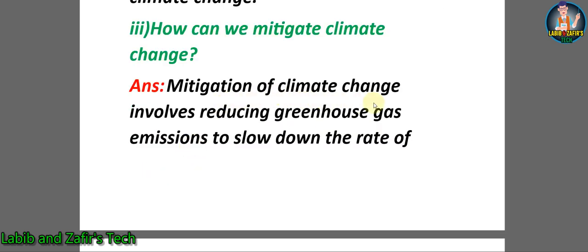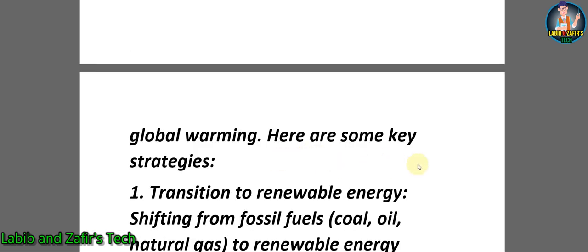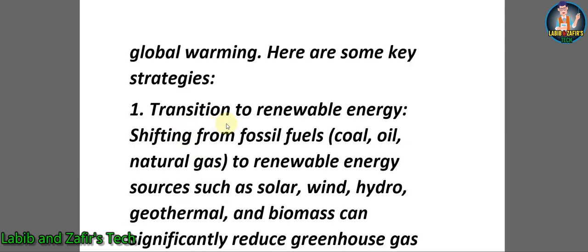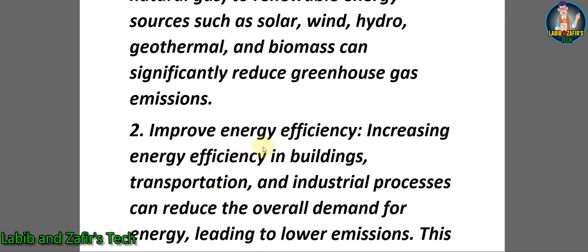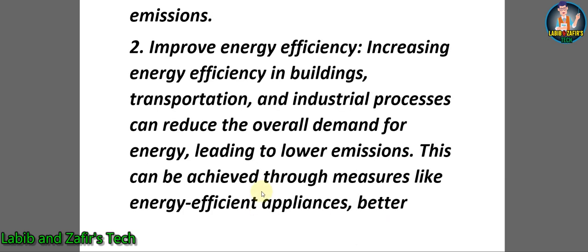Number three: how can we mitigate climate change? Answer: mitigation of climate change involves reducing greenhouse gas emissions to slow down the rate of global warming. Number one: transition to renewable energy — shifting from fossil fuels like coal, oil, and natural gas to renewable energy sources such as solar, wind, hydro, geothermal, and biomass can significantly reduce greenhouse gas emissions. Number two: improve energy efficiency — increasing energy efficiency in buildings, transportation, and industrial processes can reduce overall energy demand, leading to lower emissions, through measures like energy-efficient appliances.